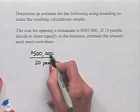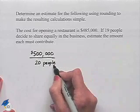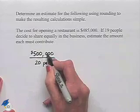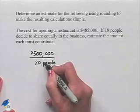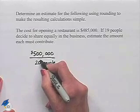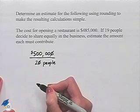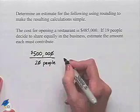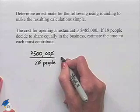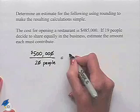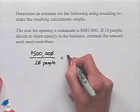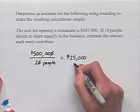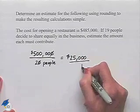So now we have 500,000 divided by 20 people. One thing to note is we could divide both numerator and denominator by 10 to start with. That would end up eliminating one of the zeros. We now have 50,000 divided by 2, which is easily done in your head to come up with $25,000 per person.